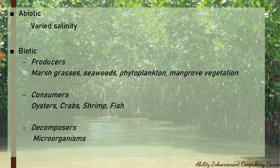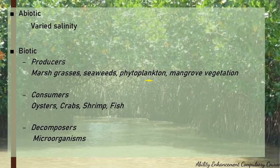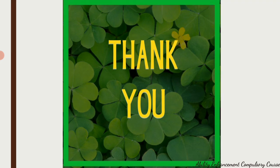The biotic components of an estuarine ecosystem include marsh grasses, seaweeds, mangrove vegetation, and phytoplanktons as producers. Consumers mainly include oysters, different types of fishes, crabs, and shrimp. Decomposers include microorganisms. These are the abiotic and biotic components of the three major aquatic ecosystems: freshwater, marine water, and estuarine ecosystems.